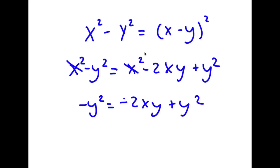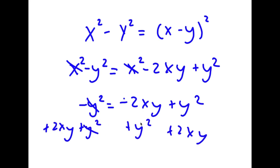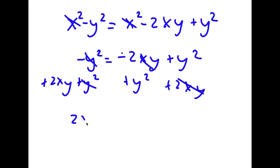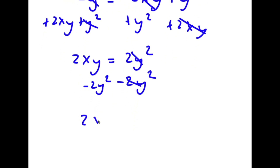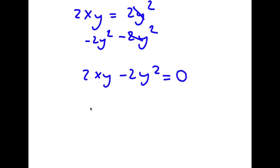Now I'm going to add y squared on both sides and add 2xy on both sides. These cancel out and I have 2xy is equal to 2y squared. Now I'm going to subtract 2y squared on both sides, and I get 2xy minus 2y squared is equal to 0. I can factor out 2y, so now I have 2y times x minus y is equal to 0.